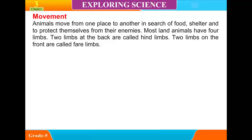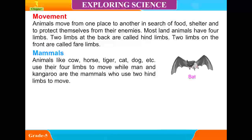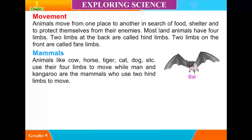Movement: Animals move from one place to another in search of food and shelter, and to protect themselves from enemies. Most land animals have four limbs — two at the back called hind limbs and two at the front called fore limbs. Mammals like cows, horses, tigers, cats, and dogs use their four limbs to move. Man and kangaroo are mammals who use two hind limbs to move.